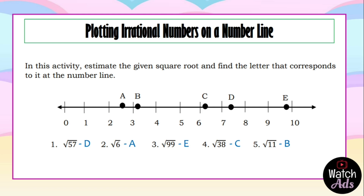Our last number is the square root of 11. The square root of 11 should be between 3 and 4 because 3 squared is 9 and 4 squared is 16. Since 9 is closer to 11, the square root of 11 should be closer to 3. Our answer letter B is correct.